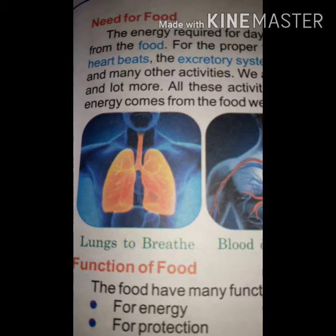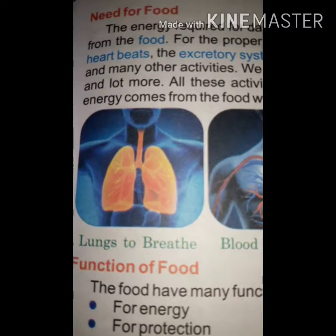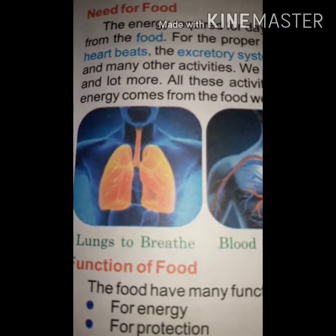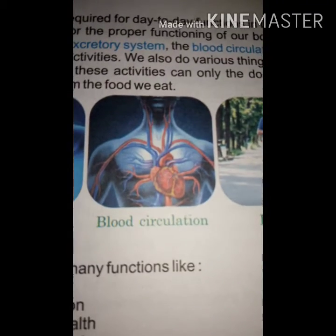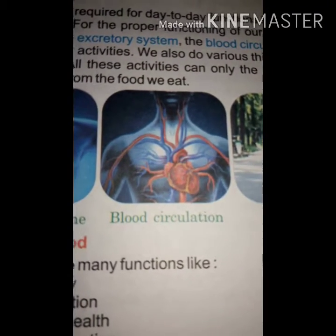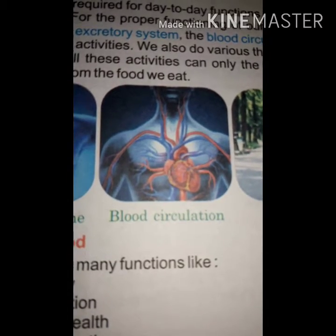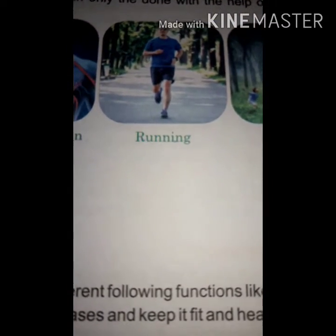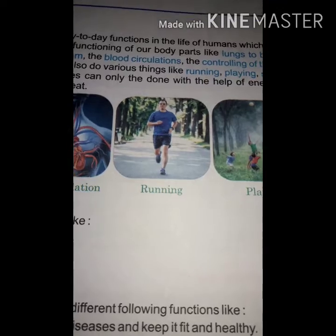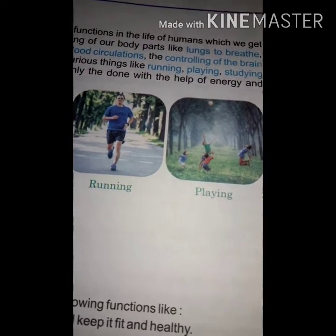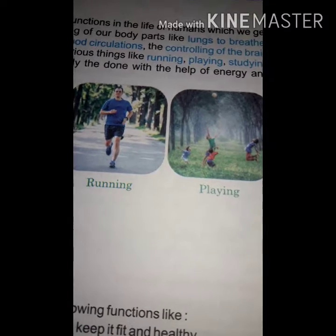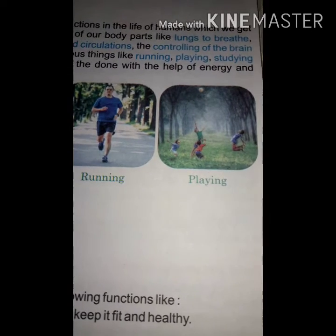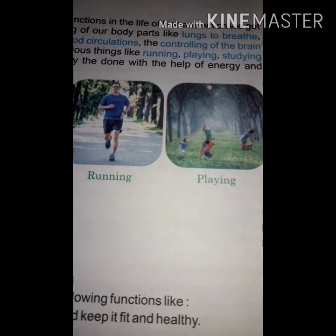There are some pictures shown in the book. The first one on the left shows lungs to breathe. Blood circulation through the heart is shown in the next picture. Physical exercise — running — is shown in the third picture. And the last one on the right side shows playing. These are the activities which consume energy, and that energy we get from food.